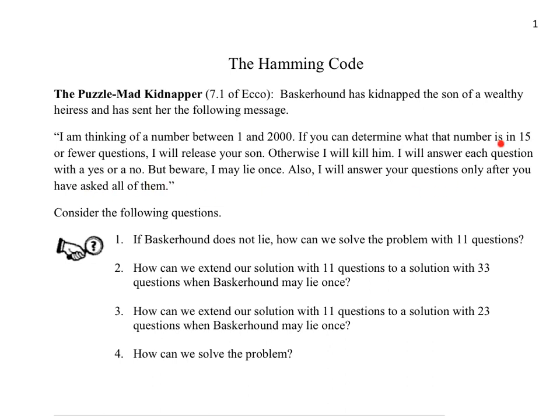So there's a number of things going on here. We have 15 questions to figure out a number between 1 and 2000, and we have to ask all of them first. That means we need a non-adaptive style solution. We can't ask the first question and then change our mind afterwards. Further, Baskerhound is only going to answer with yes or no, so we have some kind of binary system to deal with this problem.